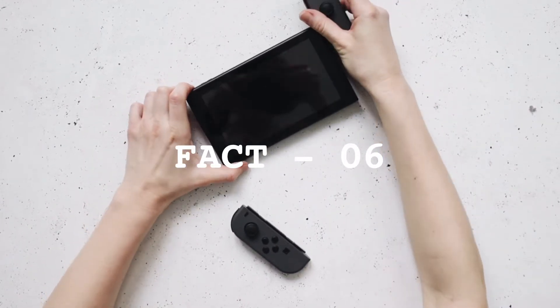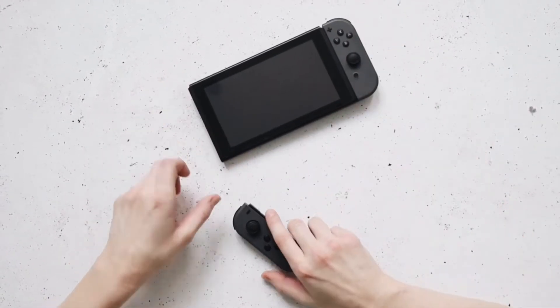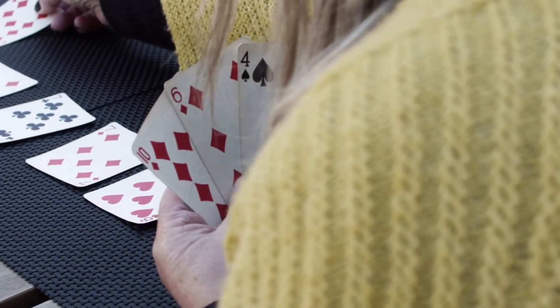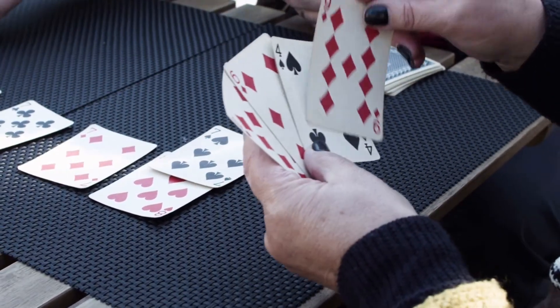Founded in 1889, Nintendo was around long before computers. So what did they sell? From 1889 to 1956, Nintendo was a playing card company.